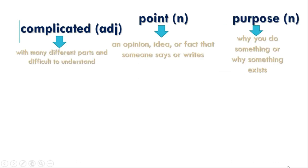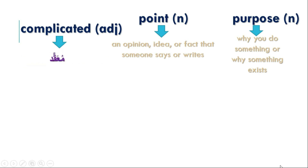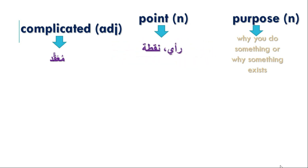Complicated — this means having many different parts and being difficult to understand; not simple. Point — an opinion, idea, or fact that someone says or writes, for example point one, point two. Purpose — why you do something or why something exists.